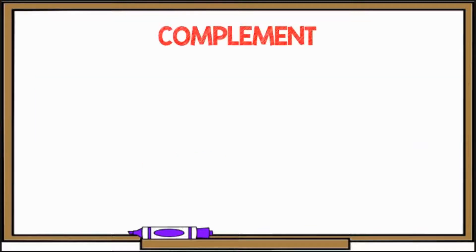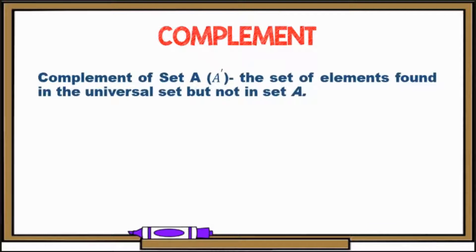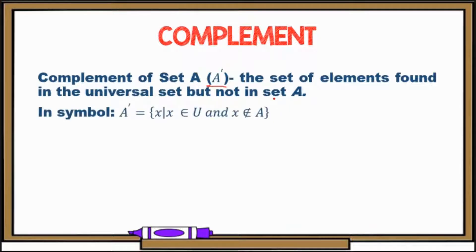Let's go to the last operation — the complement. For the complement of set A, this is denoted by the symbol A with an apostrophe on top. This is the set of elements found in the universal set but not in set A. In symbol, this is the set of all X such that X is an element of the universal set and X is not an element of A.